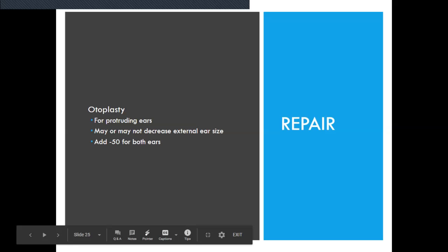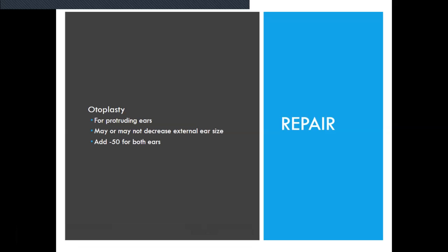Now we're going to talk about an otoplasty. An otoplasty is for protruding ears and may or may not decrease external ear size. Add modifier 50 for both ears. Repairs of the external ear may be performed due to stenosis, injury, infection, or congenital defect. Be careful in this area not to unbundle procedures.